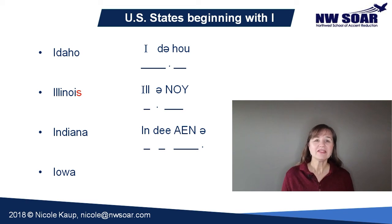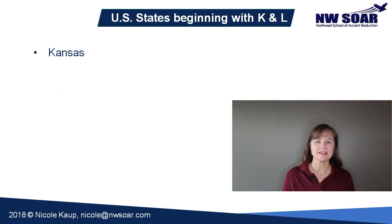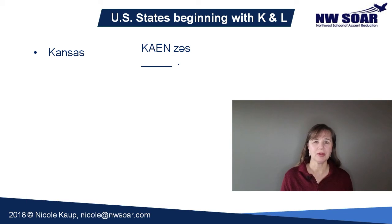Iowa. This tiny little word actually has three syllables. Stress the I and separate it from the O. Iowa. Iowa. Kansas. This one is relatively easy — stress the first syllable. And note the middle S is pronounced as a Z. Kansas. Kansas.